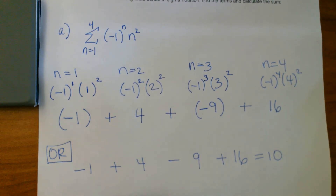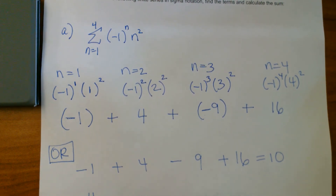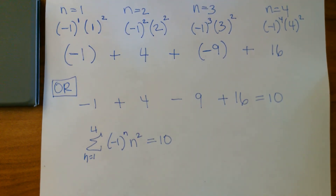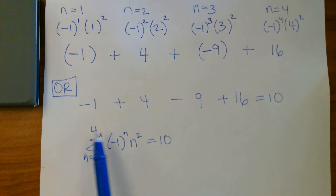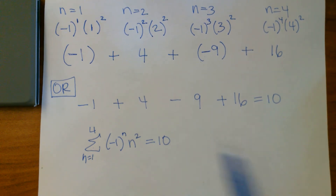So let's make it official. We have from n equals one to four: the sum of negative one to the n times n squared, equals ten. We have sigma from one to four, general rule, equals ten. So now we know what the sum is when we substitute those numbers in.